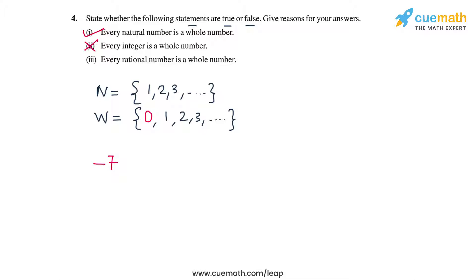Now the third statement says every rational number is a whole number. This statement is false and it's easy to see why. For example, take the rational number 3 by 2, which lies between 1 and 2. So 3 by 2 lies between 1 and 2 and it's a rational number. In the set of whole numbers, there is no number between 1 and 2.